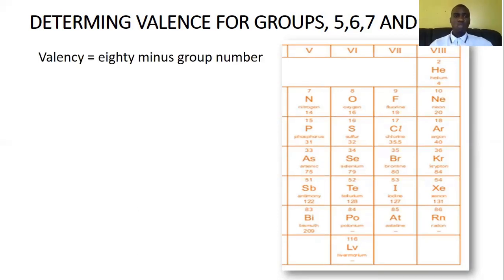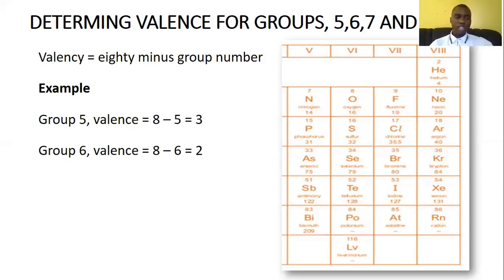So the first thing is, valence will be given by the formula eight minus group number. So this means if you are finding for group five, to find the valence, you are simply going to say valence for a group five element is equals to eight minus five. And it will give you three. Then for group six, it is going to be eight minus six, which will give you two. For group seven, it's going to be eight minus seven, which will give you one. And for group eight, it will be eight minus eight, which will give you zero.